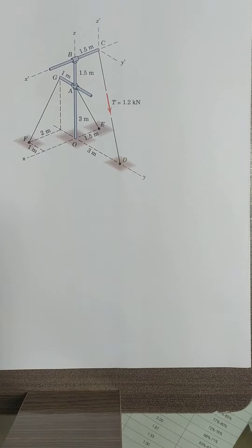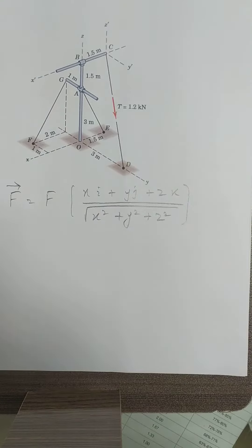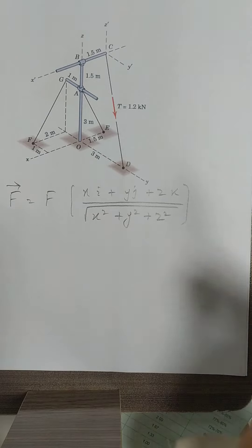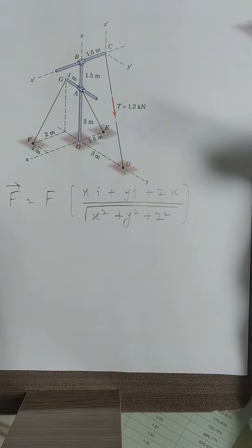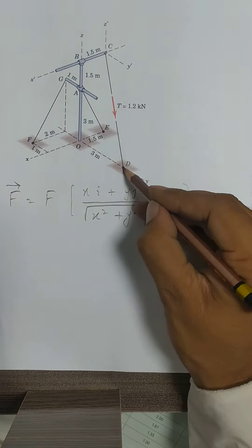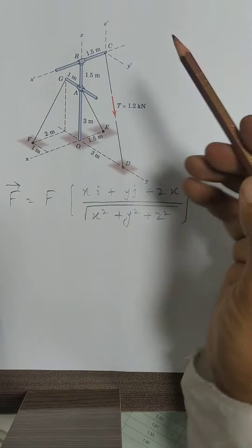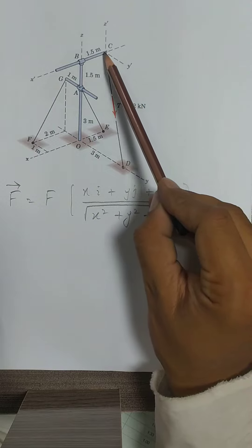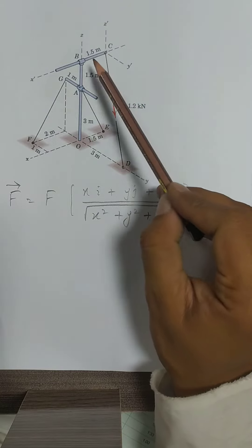In this question we will again use the same formula. Here we have the formula. Now we will look at the problem. Here we have the tail at C point, we have the tail at D point, we have the head. So we will start our tour from C and we'll go all the way to D point.